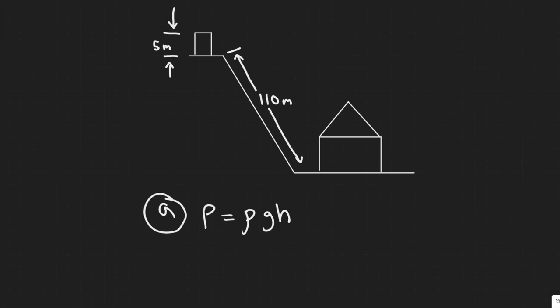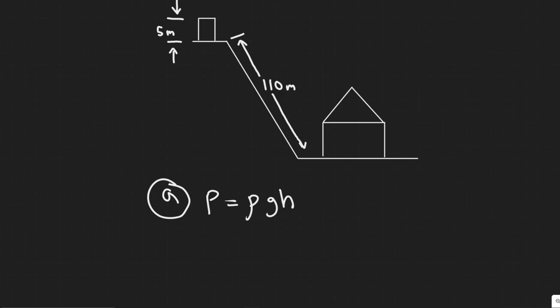Okay, so in this problem we're told a house at the bottom of a hill is fed by a full tank of water 50 meters deep and connected to the house by a pipe that is 110 meters long at an angle of 58 degrees from the horizontal. A: Determine the water gauge pressure at the house. B: How high could the water shoot if it came vertically out of a broken pipe in front of the house?